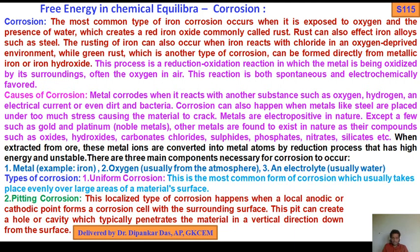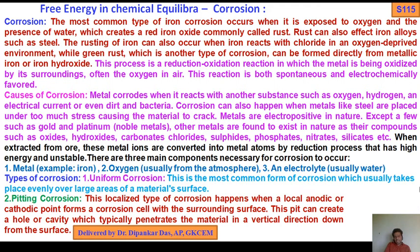Number two is pitting corrosion. This localized type of corrosion happens when local anodic or cathodic half-cell reactions occur — the half cell of oxidation will be discussed later in galvanic cell. This pit can create a hole or cavity which typically penetrates the material in a vertical direction down from the surface. That is pitting corrosion.